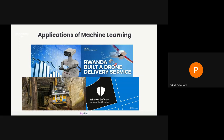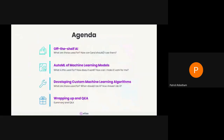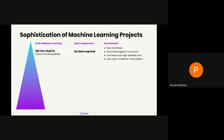Machine learning also powers chatbots on Facebook Messenger, and there are more applications in robotics, security, and Windows Defender uses machine learning to detect viruses. As far as the agenda goes, we're going to cover three different kinds of automation of machine learning: off-the-shelf AI, AutoML, and developing custom algorithms — in order from most automated to least automated — then wrap up and do Q&A.